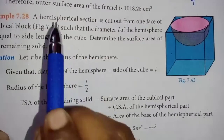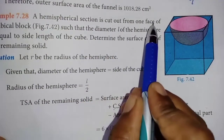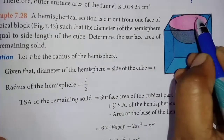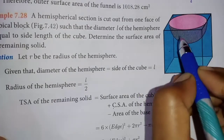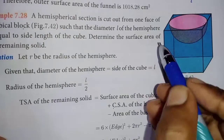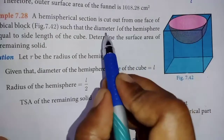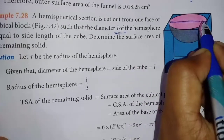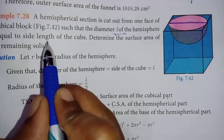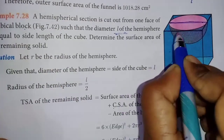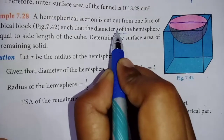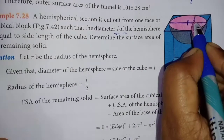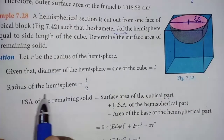Now we are going to take a look at the question. In the question, a hemispherical section is cut out from one face of a cubical block. This is the diameter of the hemisphere, L. So L is the full diameter, and L is equal to the side length of the cube.